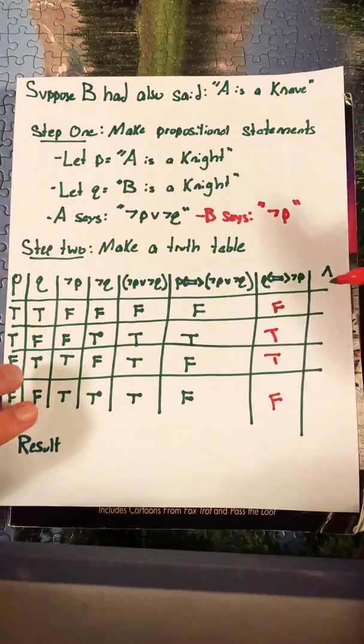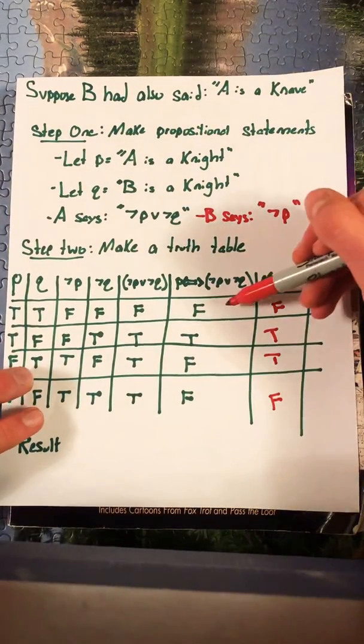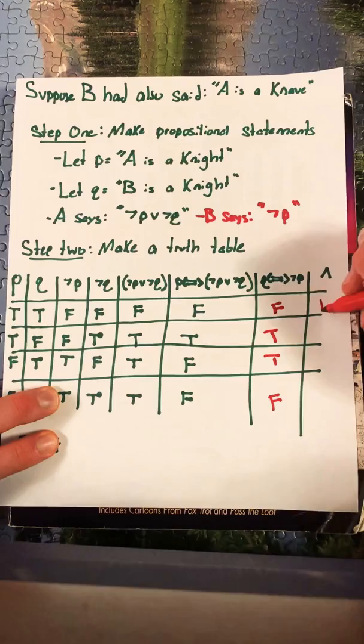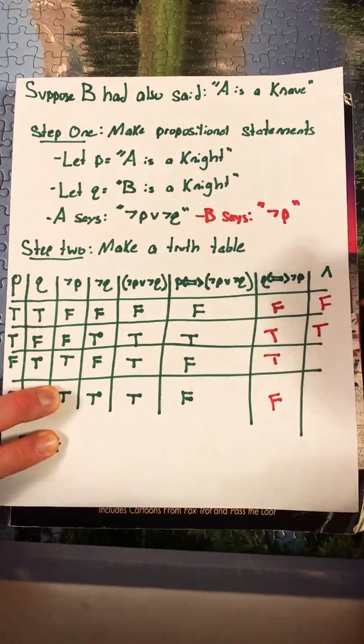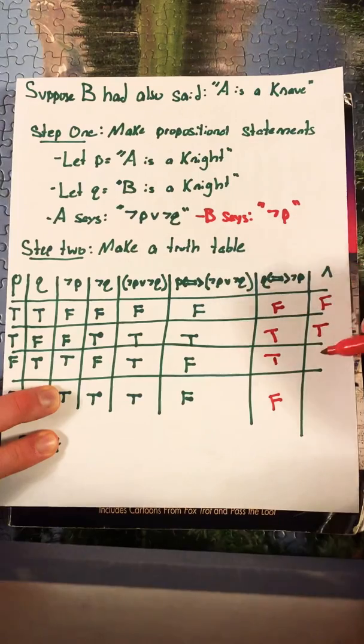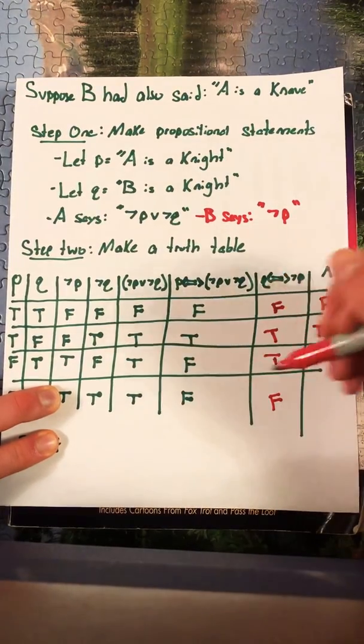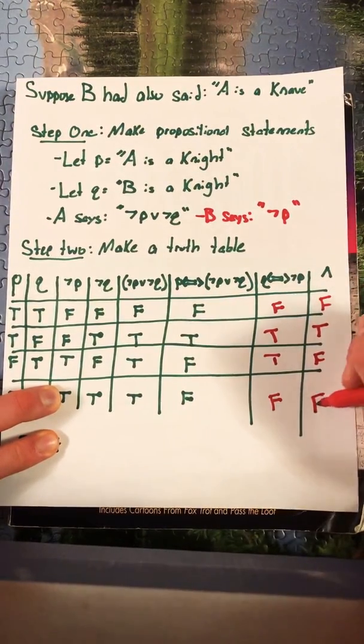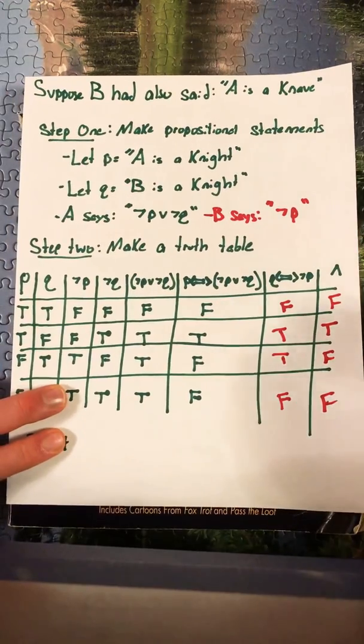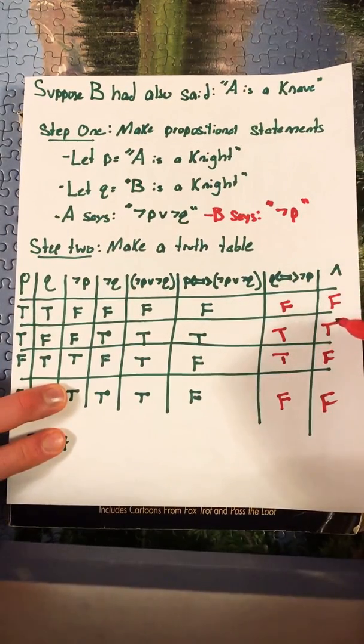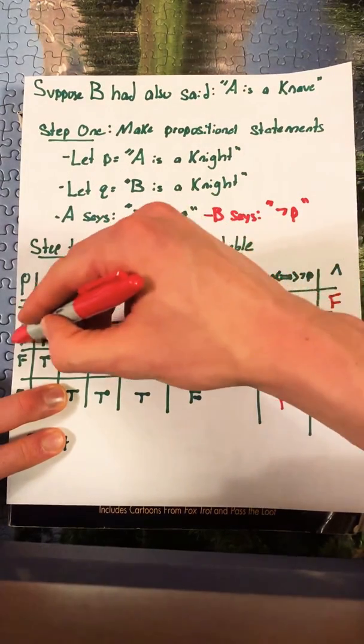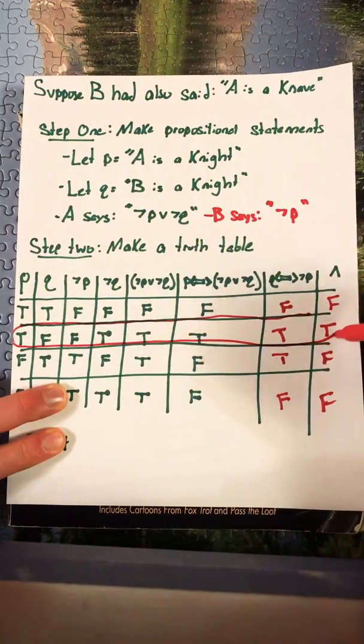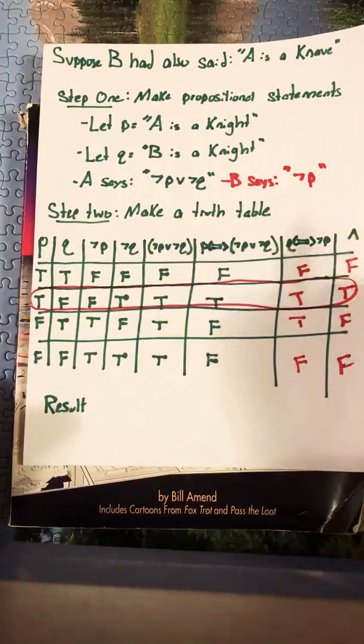Now we do the and operation. So we have a false and a false. That's going to be false. We have a true and a true. That will be true. A false and a true. That's false. And a false and a false which is false. Again we notice that only one row is going to have a true for this and of the biconditionals. We'll find that this actually gives us the same result.